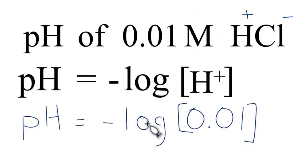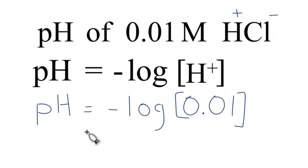If you take the log of 0.01, you get negative 2. But that negative gets canceled out by the negative in front of the log here. So we just end up with our pH equaling 2. In answer to our question, when we take the pH of a 0.01 molar solution of HCl, the pH is going to be equal to 2.